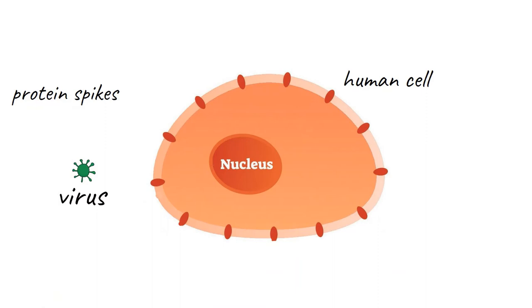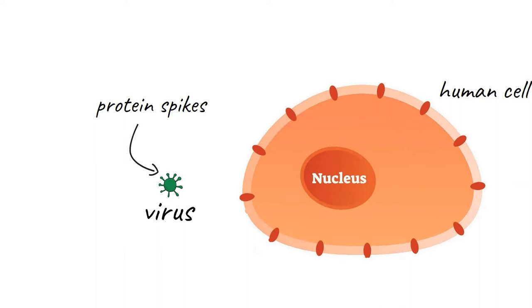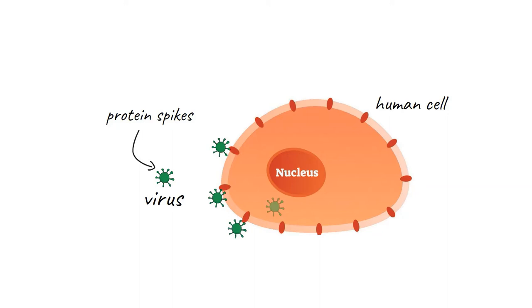A lot of viruses have spikes on the outside that are made of protein. The protein spikes help the virus to attach to a cell and eventually break into the cell where it can do the real damage. This is what makes us ill.